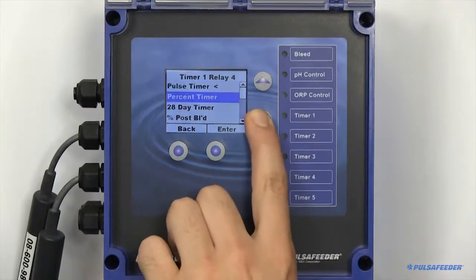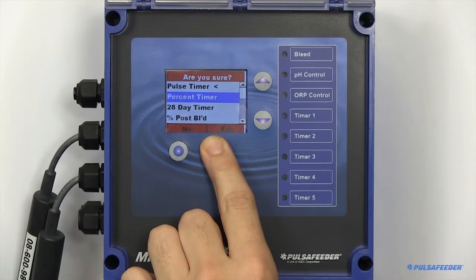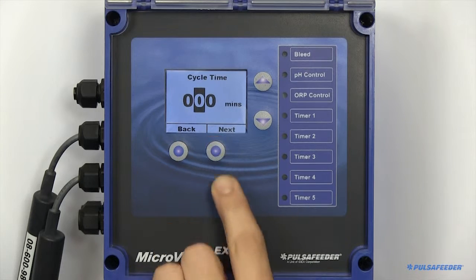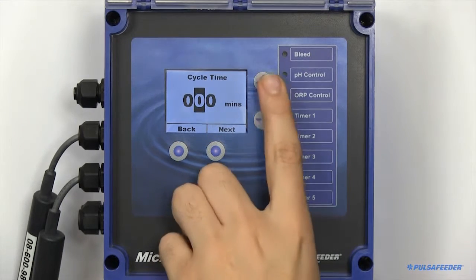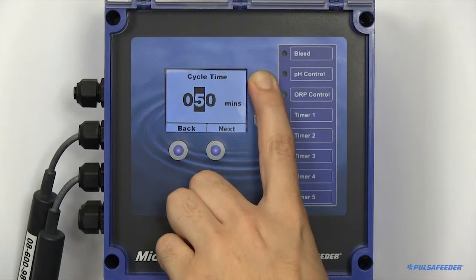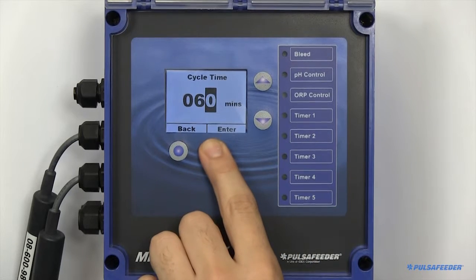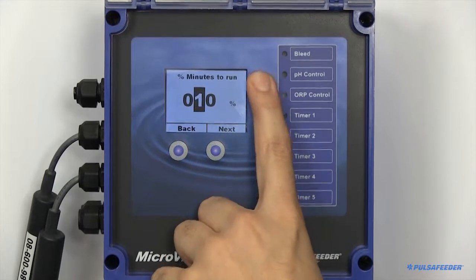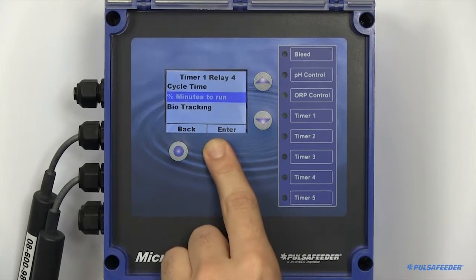There are two parameters when setting up a percent timer. You will need to set your cycle time, and your percentage of minutes you would like the timer to run. For example, 10% of 60 minutes would be 6 minutes of feed time every 60 minutes.